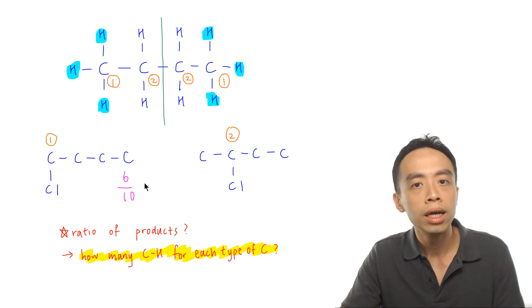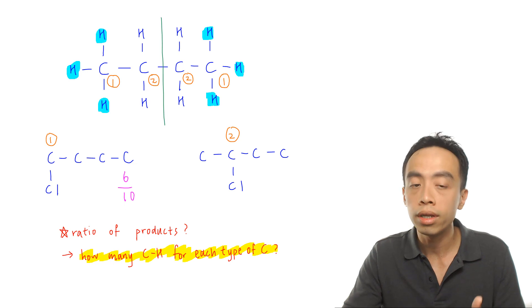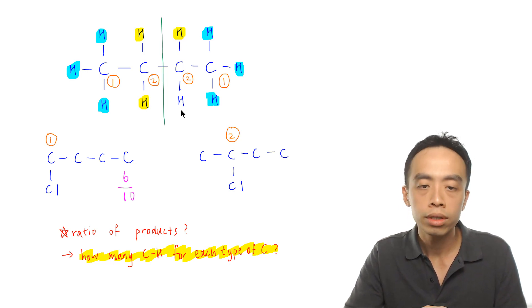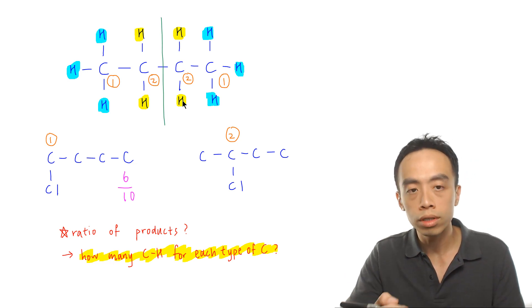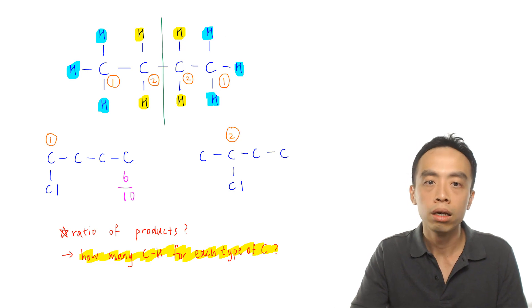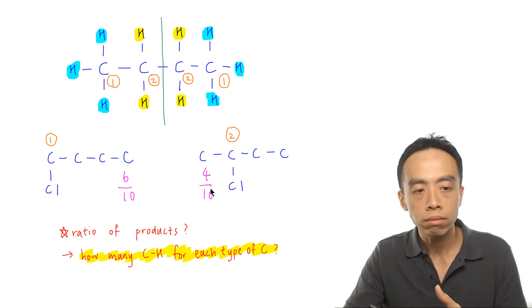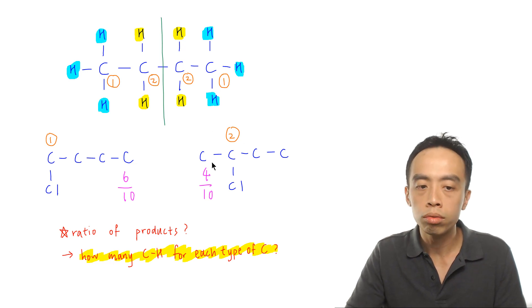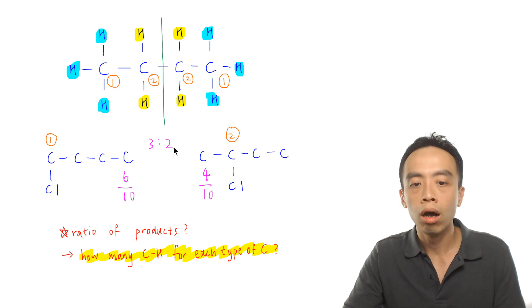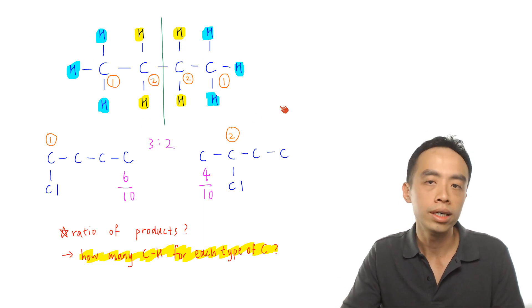For 2-chlorobutane, the hydrogen to be substituted must be on carbon position 2. Carbon position 2 has 2 hydrogens, and the other type-2 carbon also has 2 hydrogens, giving 4 hydrogens in total. So the probability of forming 2-chlorobutane is 4 out of 10. The ratio of 1-chlorobutane to 2-chlorobutane is therefore 6:4, which simplifies to 3:2. The assumption is that the probability of substitution at each hydrogen is exactly the same.